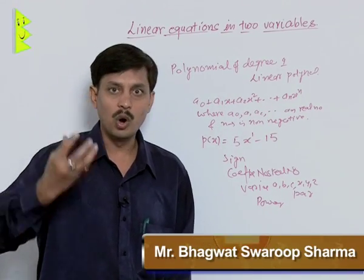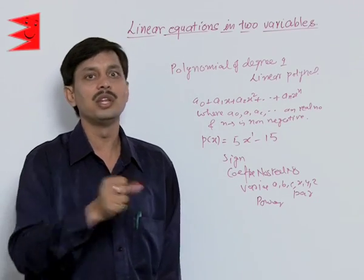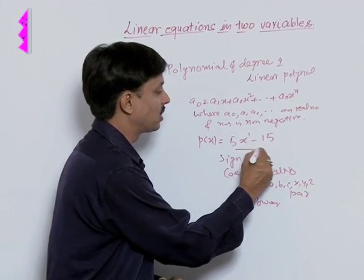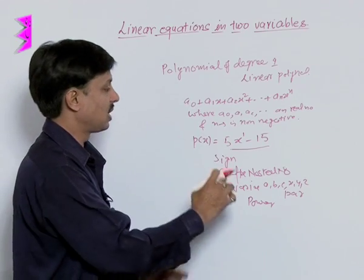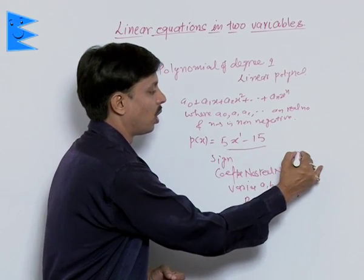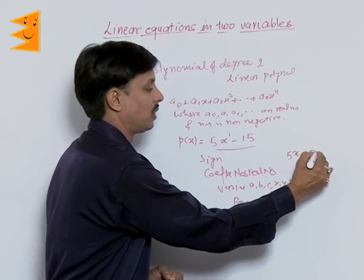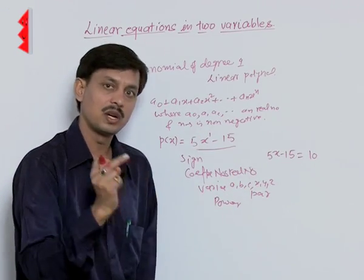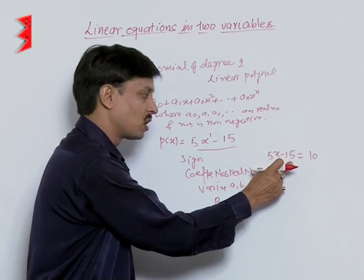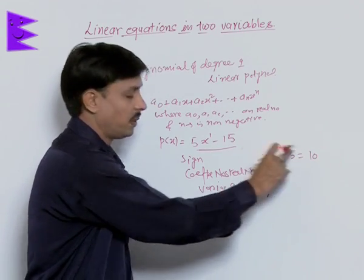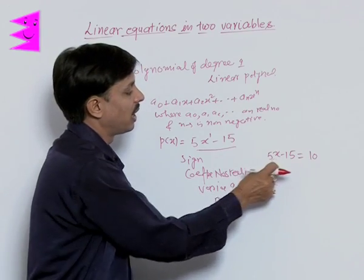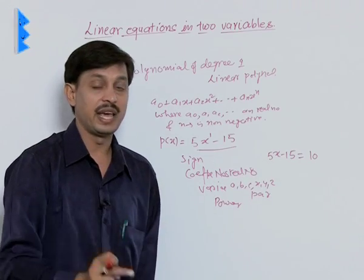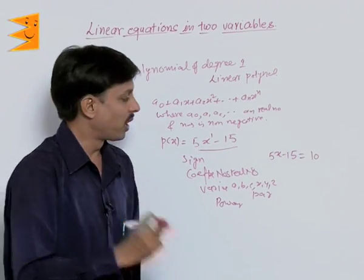In case you want to fix the value of that linear polynomial, then we can write like this. Suppose I want to make that the value of 5x minus 15 is suppose 10. So 5x minus 15 was the linear polynomial. When it is equated to some particular real value, now it has become linear equation. If it is linear equation, then it has only one possible value.